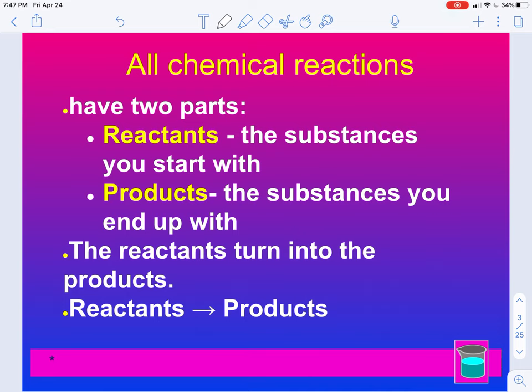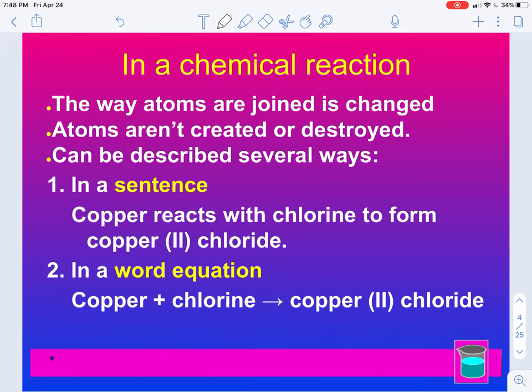We're going to do some review here. Remember that all chemical reactions have two parts: a reactant side and a product side. The reactants will turn into products. The reactants are on the left side, and the products are on the right side, separated by this yield. In a chemical reaction, the way atoms are joined is changed. That's what happens from the reactant side to the product side.